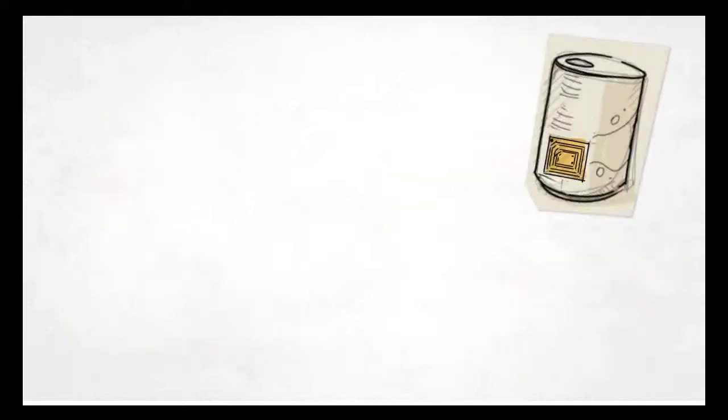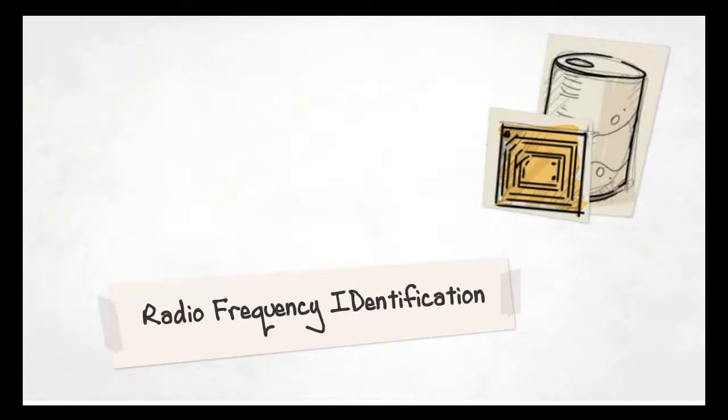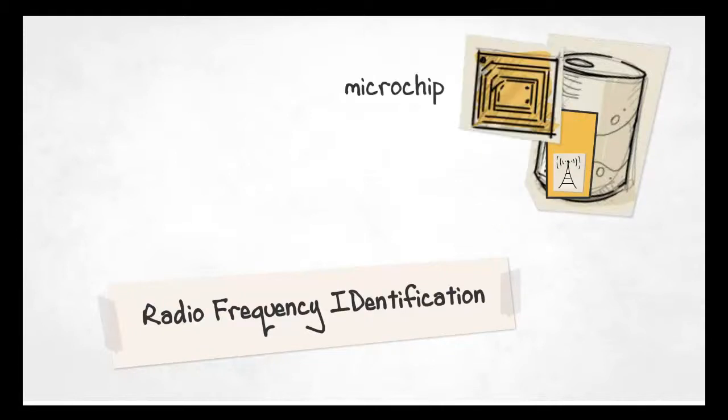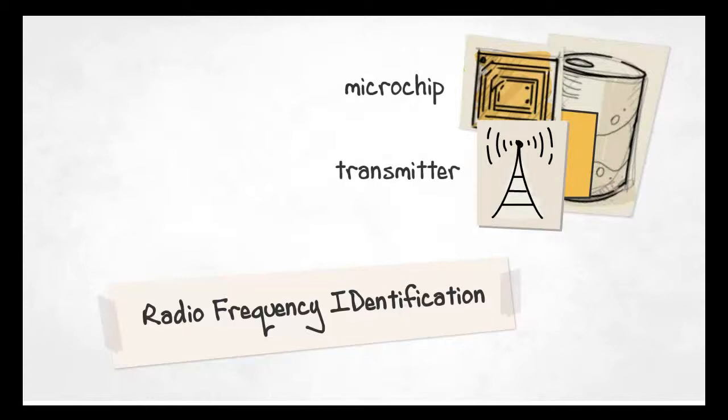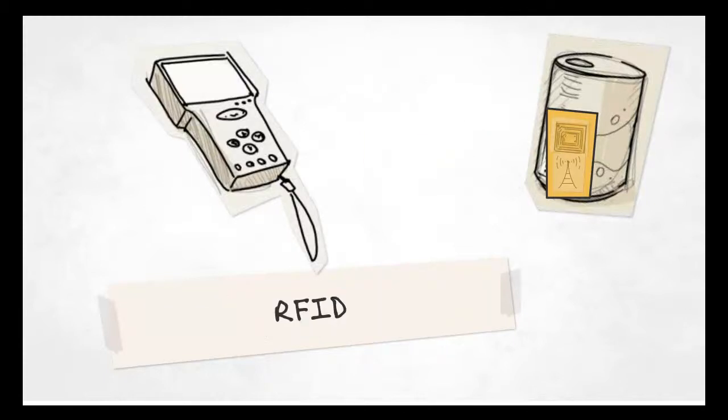These chips already exist and the technology they use is called RFID, short for Radio Frequency Identification. While RFID tags contain a small microchip and a transmitter, they can only be activated by an RFID reader, to which the tag returns its signal. That's why RFID is called a passive technology.